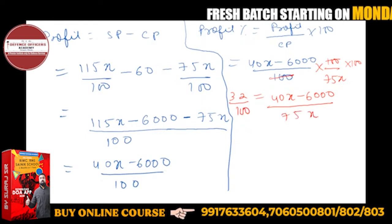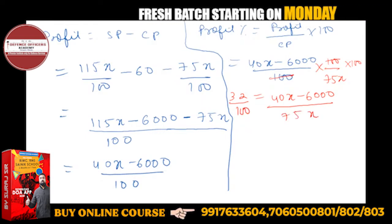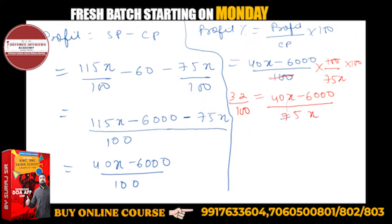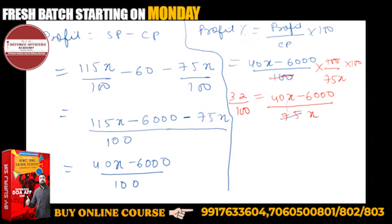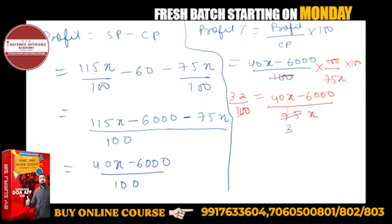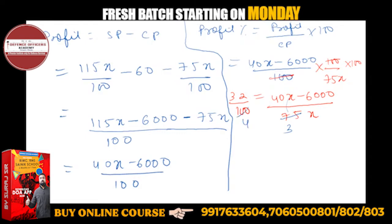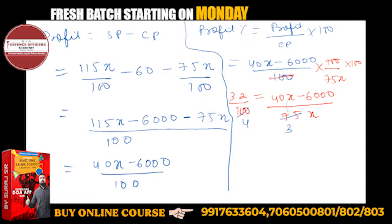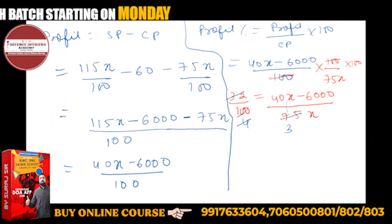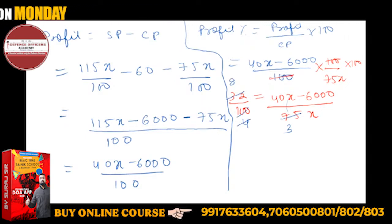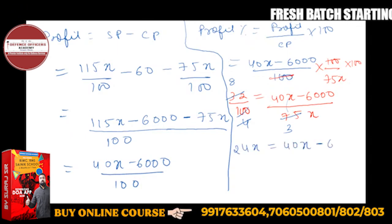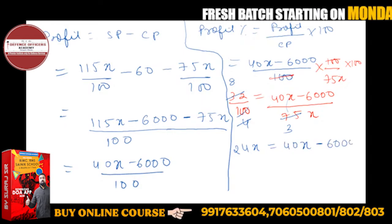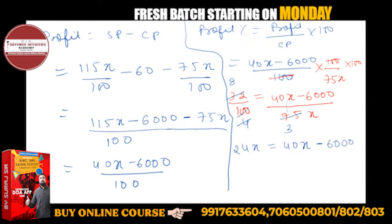Upon 100. 75x divided, 25 threes, and 25 fours. 4 how many times? 4. Cross multiplication, so 8 times 3 is 24x equals 40x minus 6000.